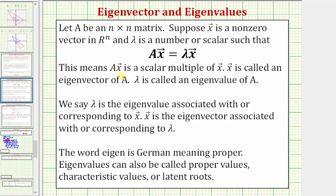This means that A times vector x is a scalar multiple of vector x, and vector x is called an eigenvector of A, and lambda is called an eigenvalue of A.